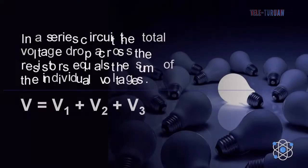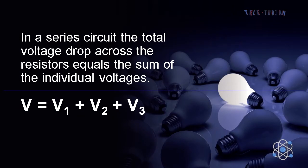In a series circuit, the total voltage jump across the resistors equals the sum of the individual voltages.